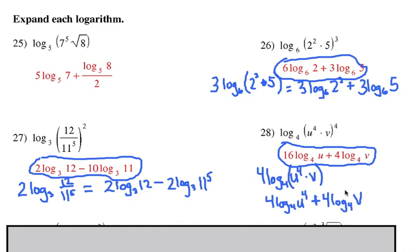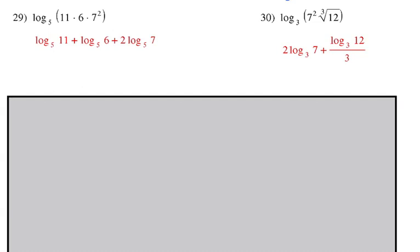Let's look at the last two. Hopefully you're getting the hang of expanding out these log expressions. Inside, of course, I have a product. I have the 11, the 6, and the 7 squared. Because it's a multiple product there, I'm going to split it up into addition. We've got log base 5 of the first part, 11, and then we have log base 5 of the 6, and then we have log base 5 of 7 squared. Don't forget, you can move the exponent to the front, it becomes multiplication right there, so it's 2 log 5, 7.